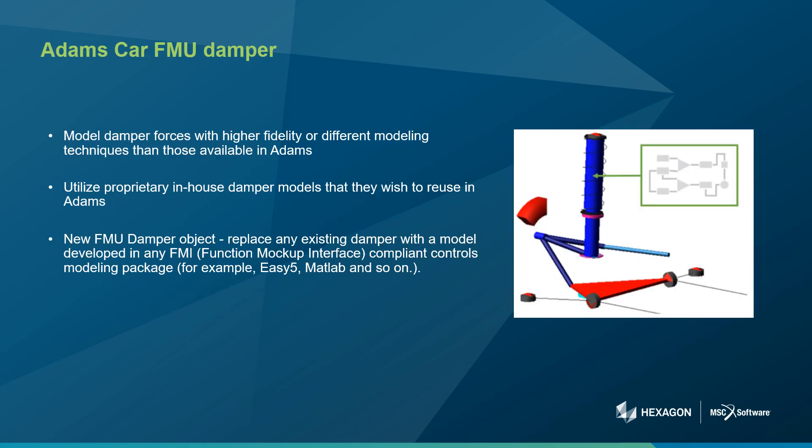Some users wish to model damper forces with higher fidelity or different modeling techniques than those available in Adams. Others have developed proprietary in-house damper models that they wish to reuse in Adams without exposing their methods. To address these needs, a new object in Adams Car has been implemented that acts as a wrapper around a functional mock-up unit, or FMU. The new FMU damper object lets you replace any existing damper with a model developed in any functional mock-up interface compliant controls modeling package — for example, Easy5 or MATLAB.